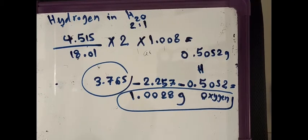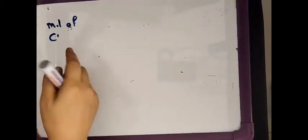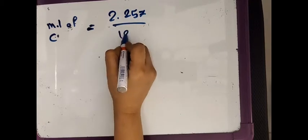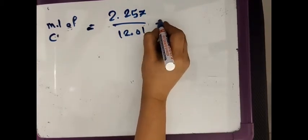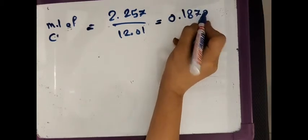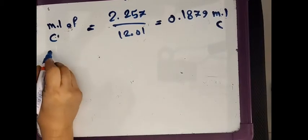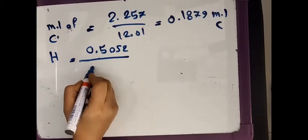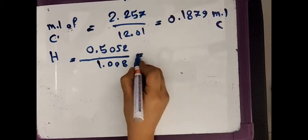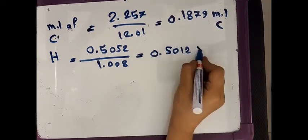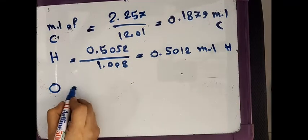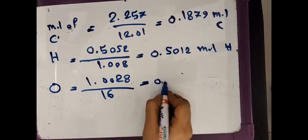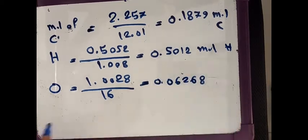Next, find the moles of each element. Moles of carbon = 2.257 g ÷ 12.01 = 0.1879 mol. Moles of hydrogen = 0.5052 g ÷ 1.008 = 0.512 mol. Moles of oxygen = 1.0028 g ÷ 16 = 0.06268 mol.